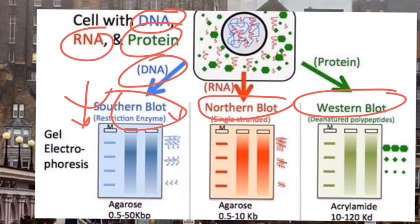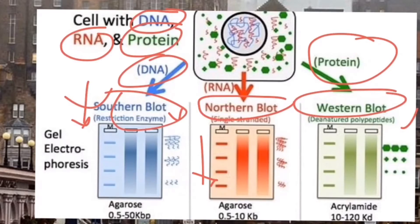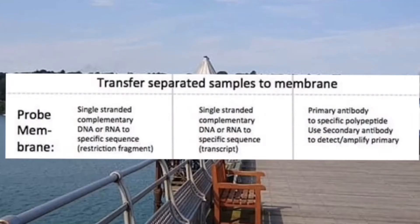If you want to identify a DNA molecule, you use the Southern blotting technique, which involves restriction digestion enzymes. For RNA molecules, you use the Northern blotting technique. For proteins, you use the Western blotting technique, where you denature the specific polypeptide chains to find a particular specific band, running them on an acrylamide-based or agarose-based gel.